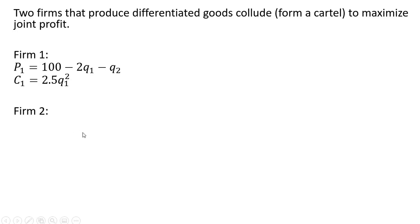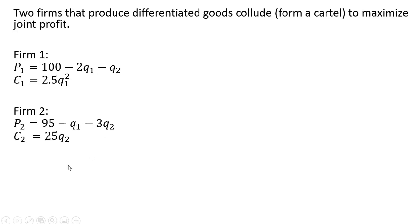And here we have Firm 2. Firm 2's inverse market demand is given as follows. Q subscript 1 is Firm 1's output and Q subscript 2 is Firm 2's output. And Firm 2's cost function is: cost equals 25 times the output of Firm 2.